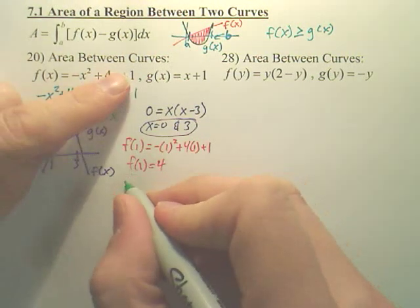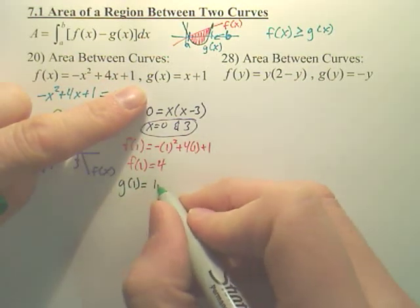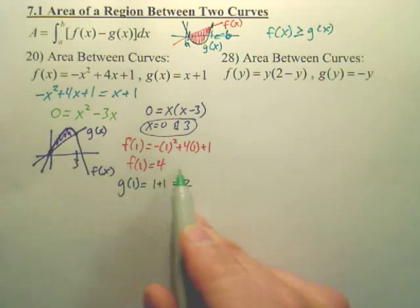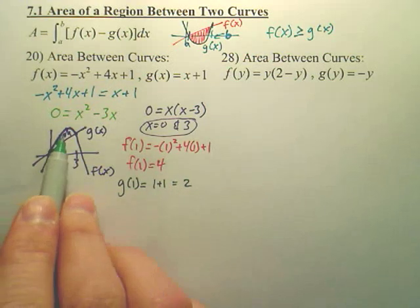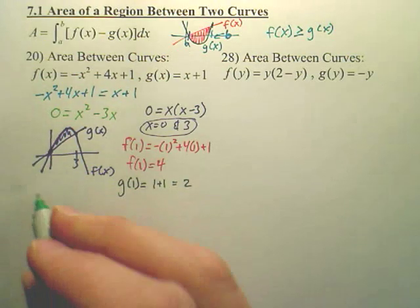Now, then I choose g of 1. You have the same number. That would be 1 plus 1, which is 2. Which of these is bigger? f of x is bigger than g of x, so that proves f of x is always going to be on top of g of x.